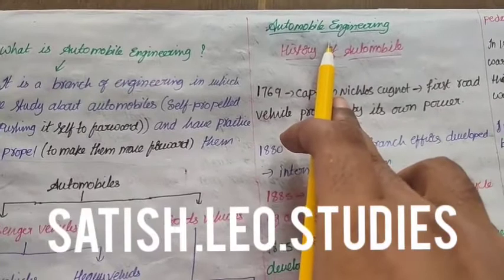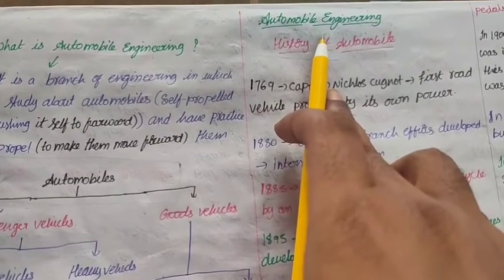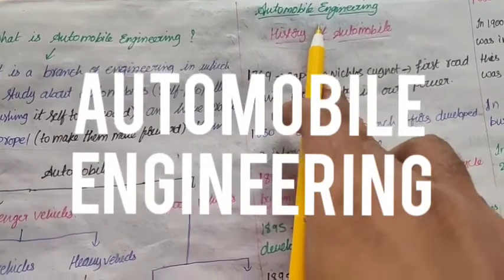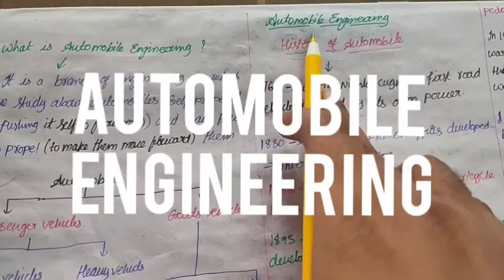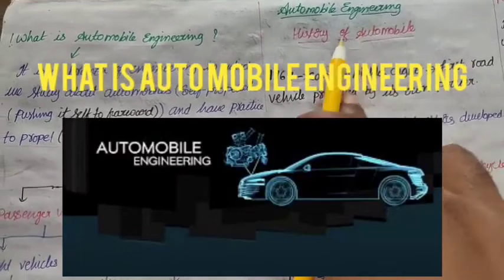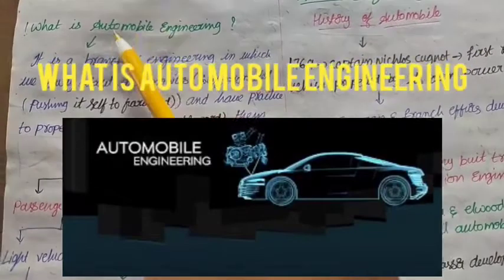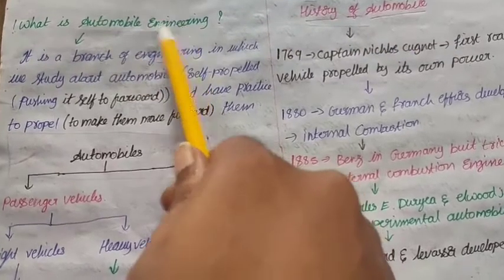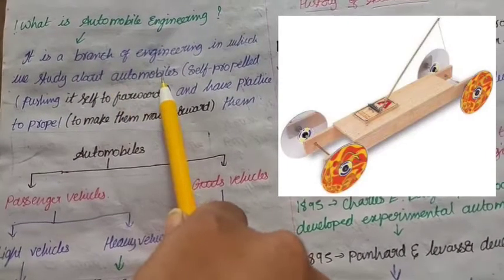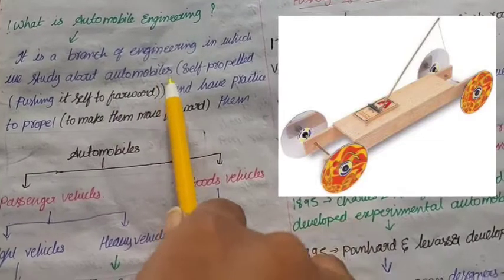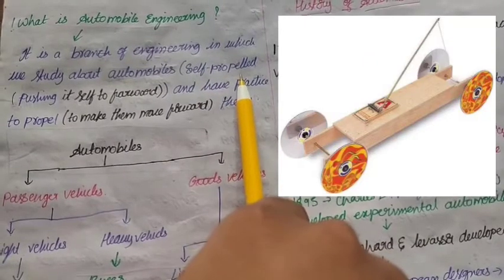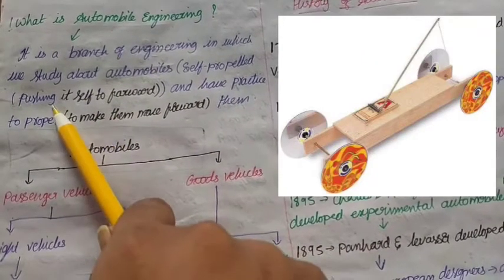Hi students, welcome. This is Satish from Satish Leo Studies. I came with another branch of engineering, that is automobile engineering. So let's find out what is automobile engineering. Automobile engineering means simply the study about automobiles. So what is the meaning of automobiles? It means self-propelled.